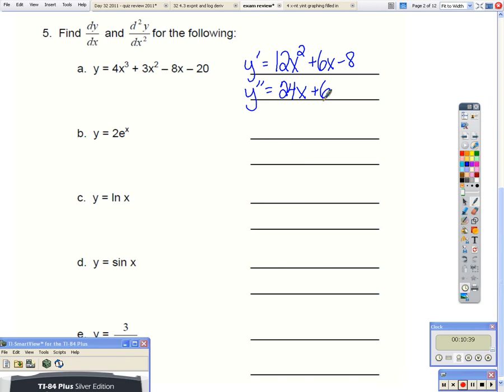Okay, so for letter b, 2e to the x. Well, the derivative of e to the x is e to the x. So this stays 2e to the x. And the second derivative works the same way.